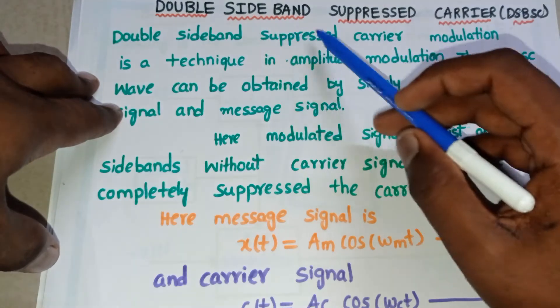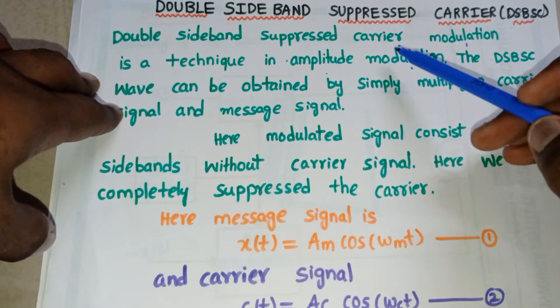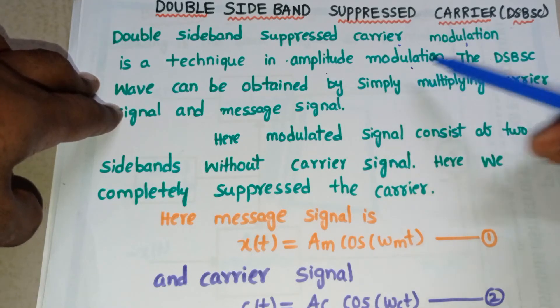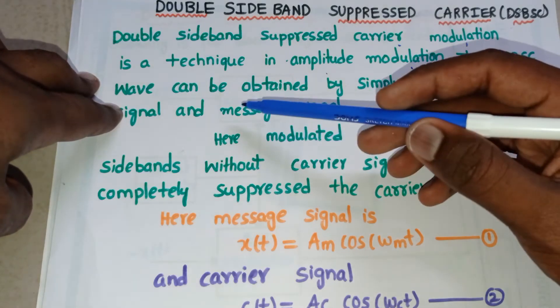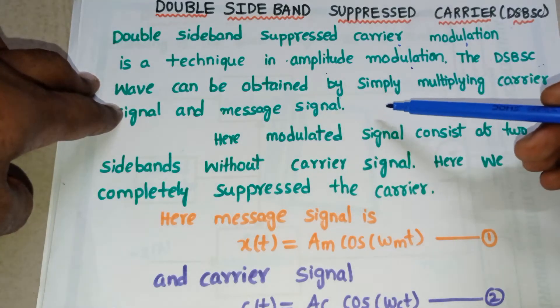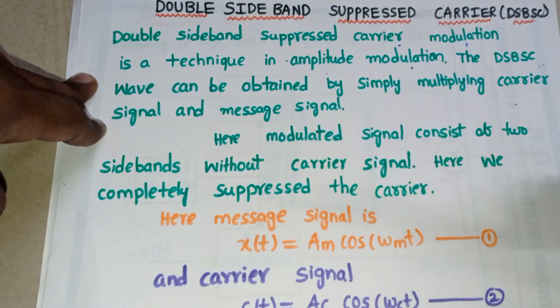Double Sideband Suppressed Carrier modulation is a technique in amplitude modulation. The DSBSC wave can be obtained by simply multiplying carrier signal and message signal.